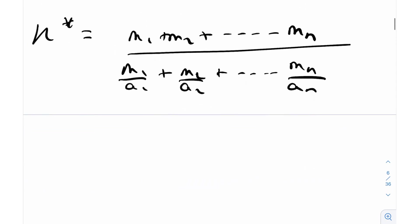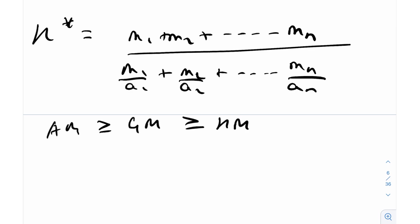The inequality states: just as AM ≥ GM ≥ HM, here we have A-star ≥ G-star ≥ H-star — the same ordering holds for the weighted means. Equality holds when A₁ = A₂ = A₃ = ... = Aₙ, i.e., all terms are equal to one another. In all other general cases, we use the greater than or equal to symbol.